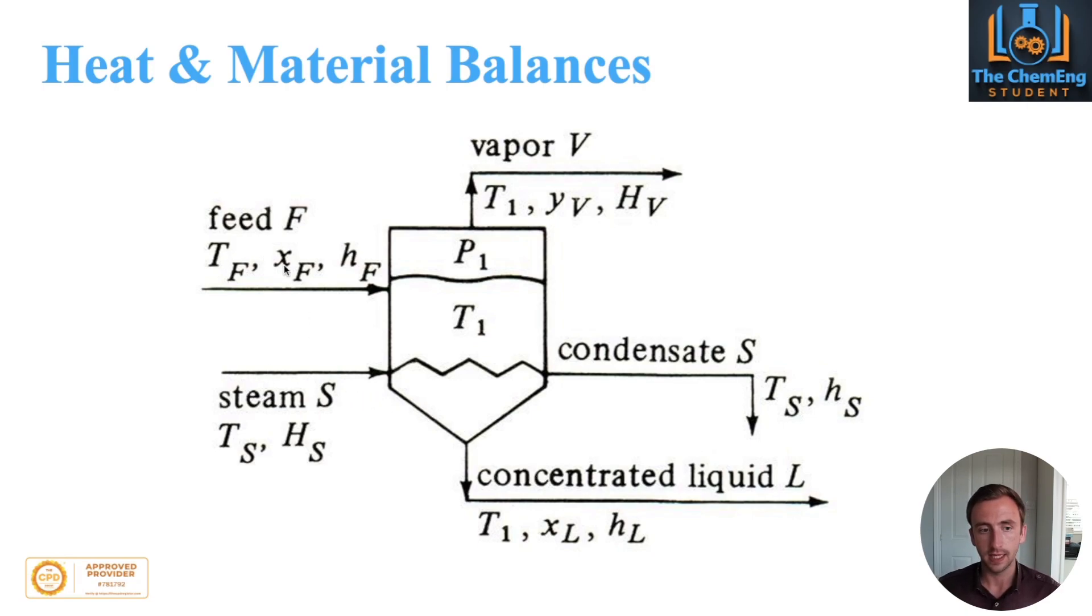The nomenclature here is that the lowercase x's denote the mass fraction of material in the liquid phase. The lowercase y represents the mass fraction in the vapor phase. The V's stand for the vapor stream, L for the liquid stream, F for the feed stream. The capital H here is the enthalpy of the steam. The reason this is lowercase h is so we have a distinction between the inlet and the outlet, because as the heat is given off, it will have a different enthalpy. That's the nomenclature we're going to use.